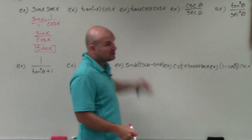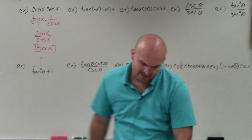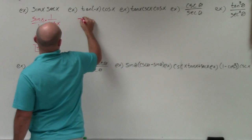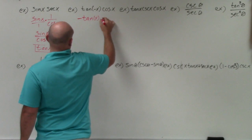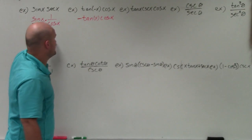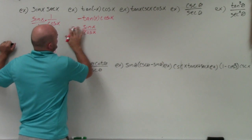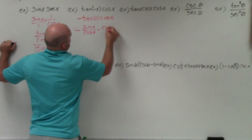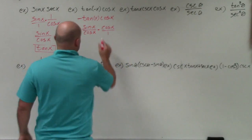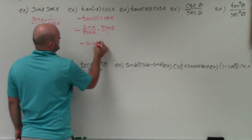In the next example, I have tan of negative x. Going back to our trigonometric identities — the even-odd identities — tangent of negative x is the same thing as negative tangent of x, times cosine of x. We know tangent is the same as sine of x over cosine of x, so rewriting gives negative sine of x over cosine of x, times cosine of x over 1. The cosine of x cancels, leaving us with negative sine of x.